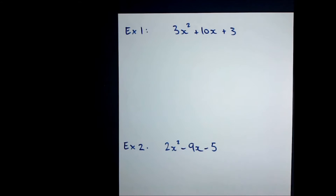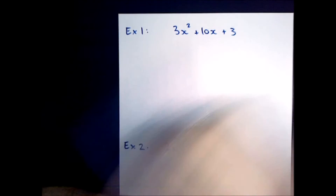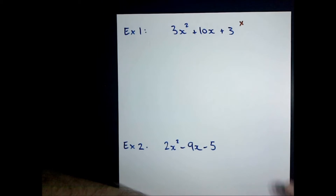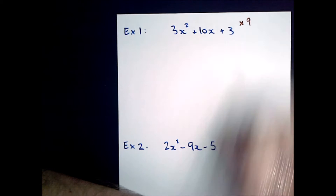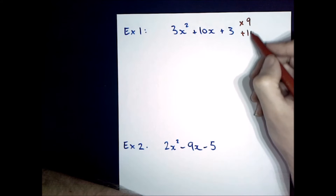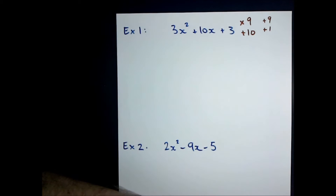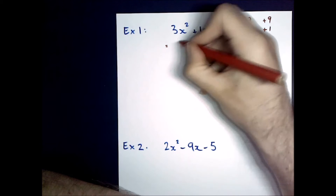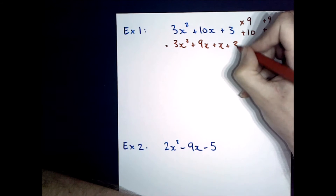So the first one — first thing to do is check to see if I can factorise out this front number. My terms can't all be divided by 3, so I can't get rid of it. So what I need to do is find a number that multiplies to get my first number multiplied by my last. So it has to multiply to get 9, and it has to add to get 10. This one's an easy one — the two numbers are positive 9 and positive 1. So I'm going to split this 10x term into 9x and 1x, so I end up getting 3x squared plus 9x plus x plus 3.